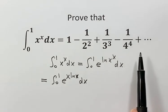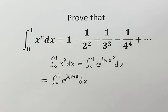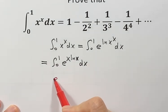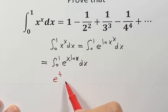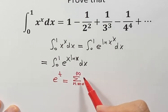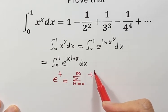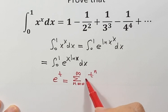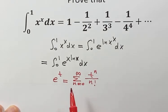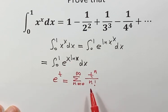Because the right-hand side is a series, we think about using a Taylor series expansion. So here is the Taylor series expansion: e to the power t equals the sum from 0 to infinity of t to the power n divided by n factorial.